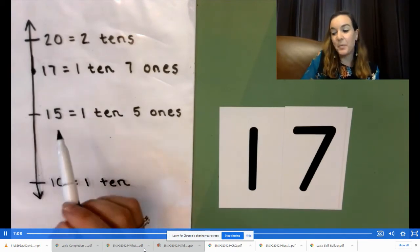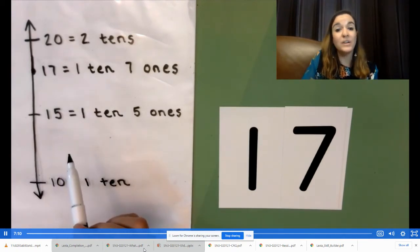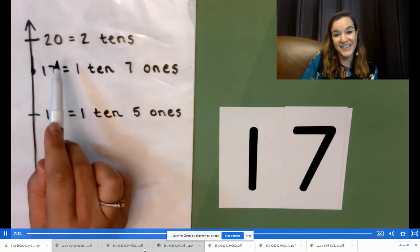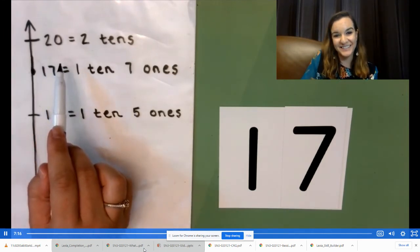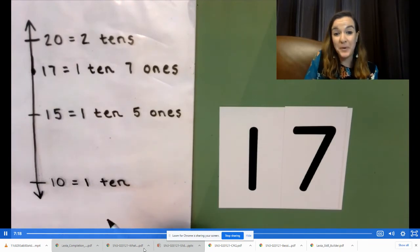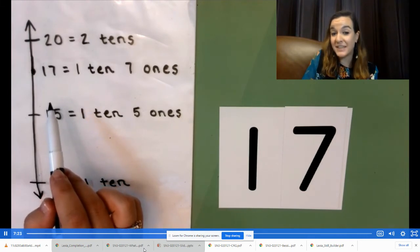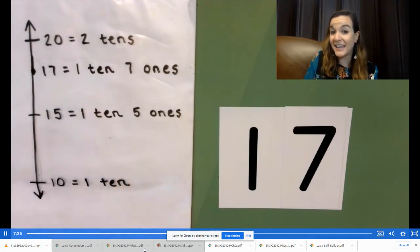Is 17 more than halfway or less than halfway between 10 and 20? More than halfway. So 17 milliliters rounded to the nearest 10 milliliters is 20 milliliters.